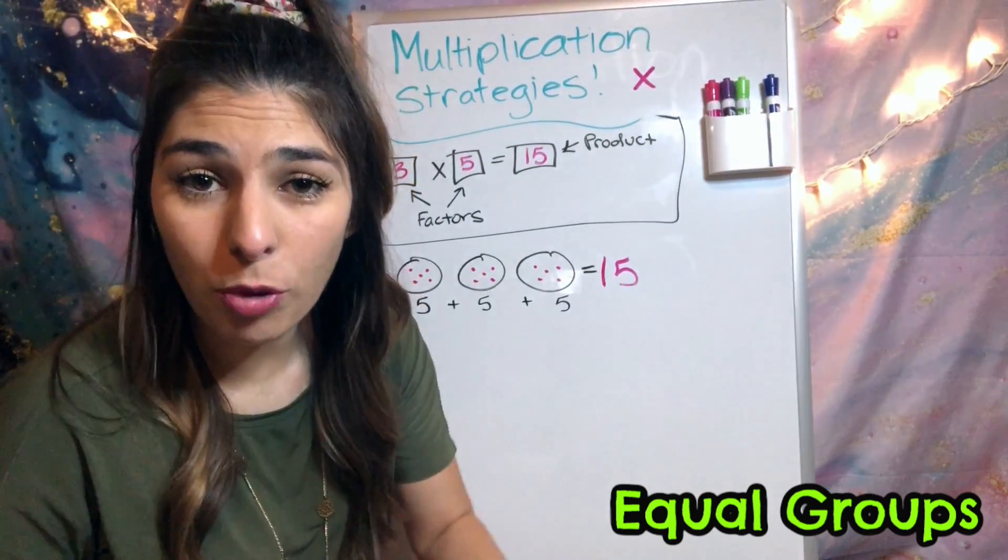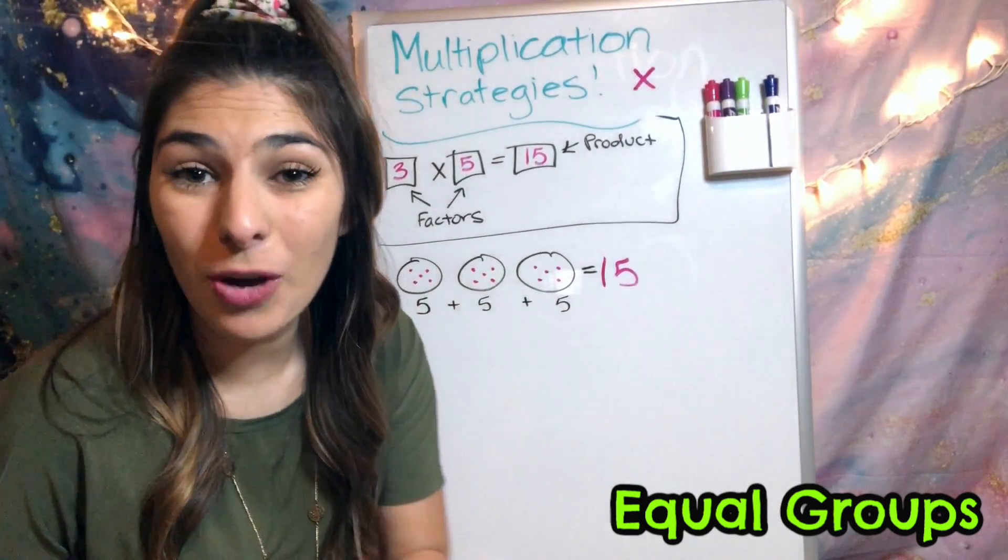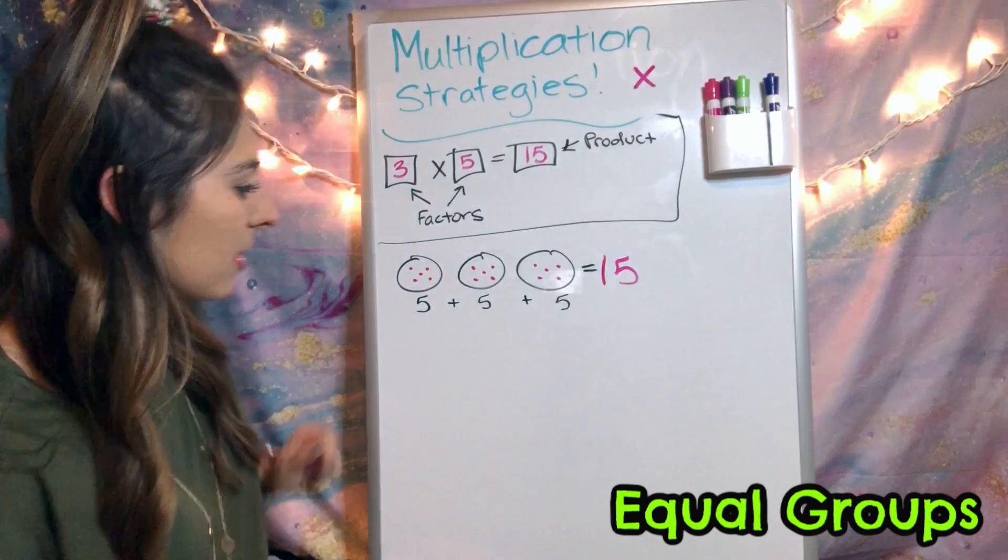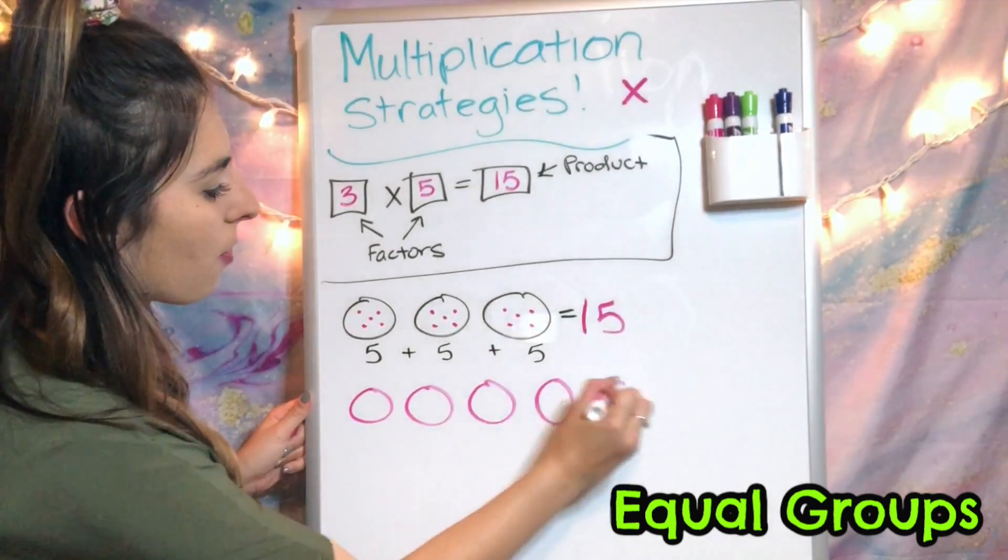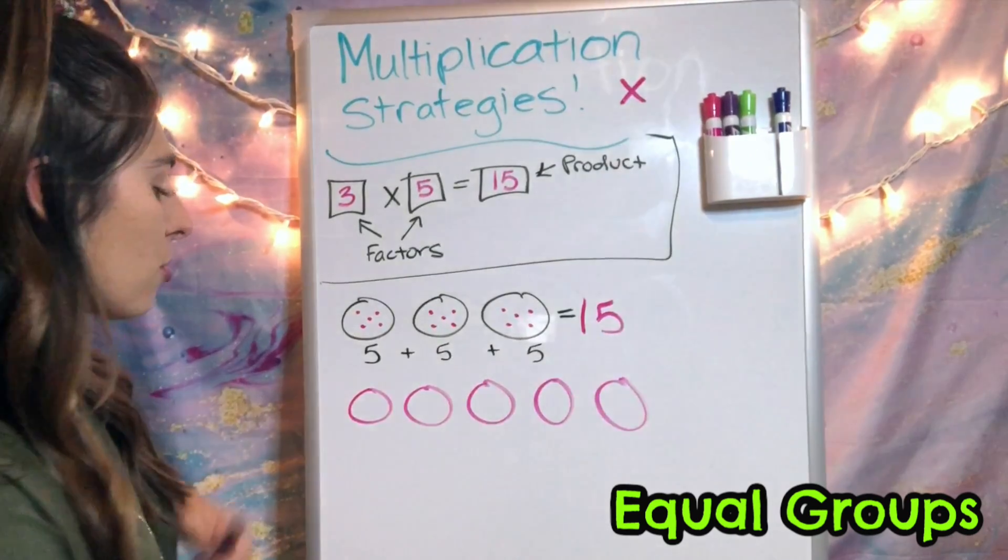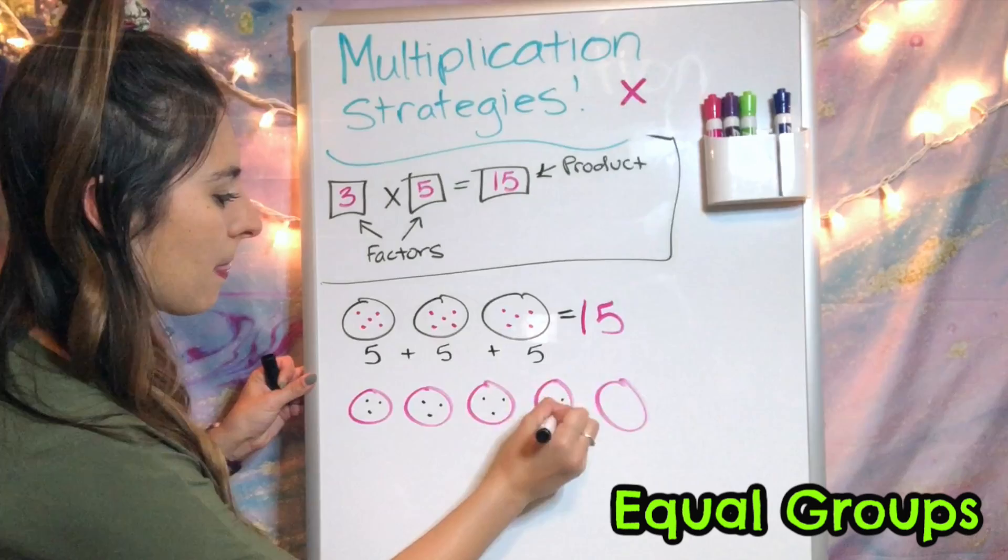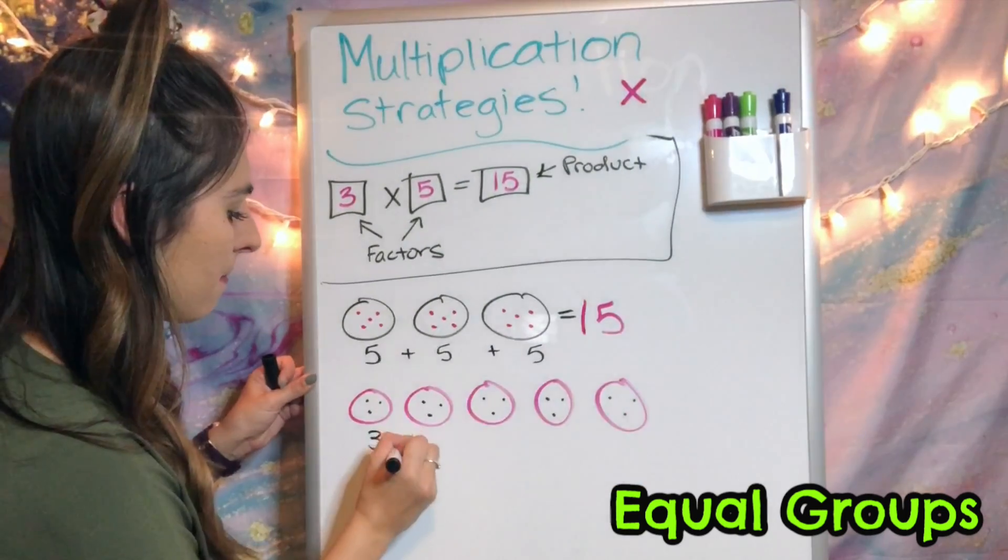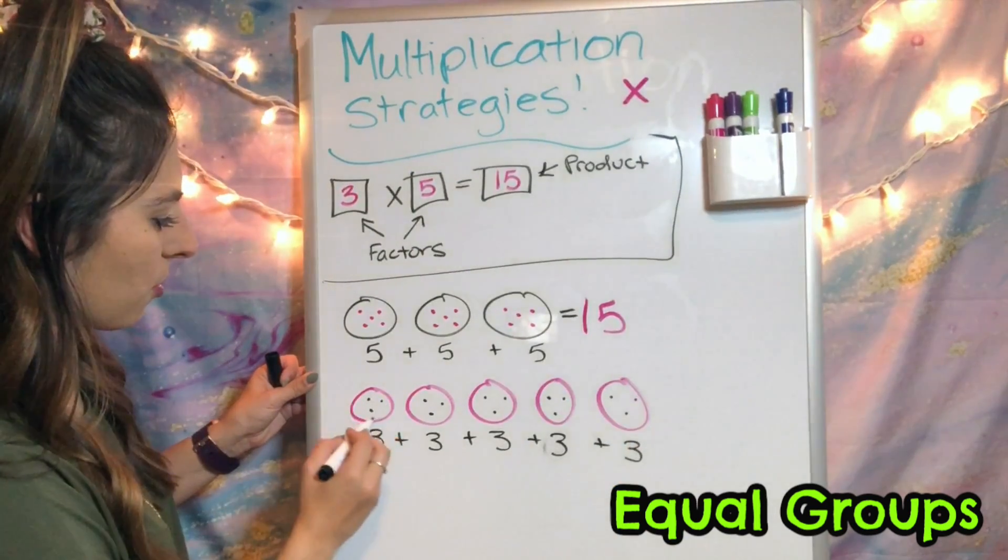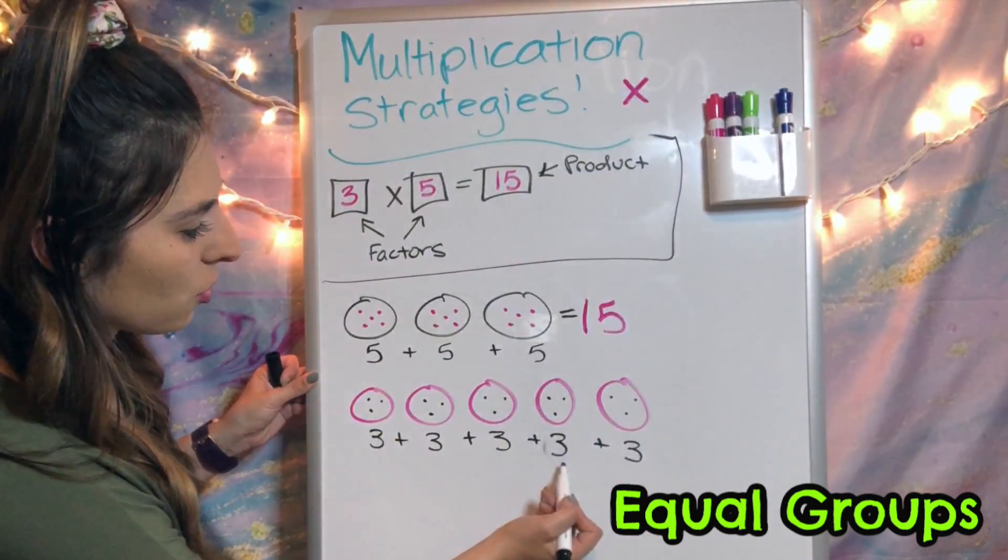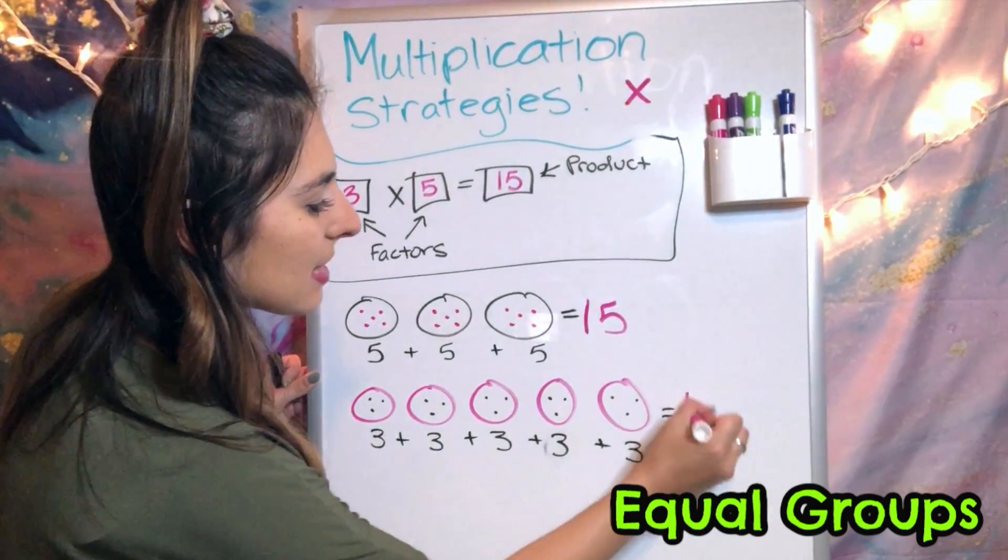With this, if you do commutative property, you can switch them and then you can do five groups and each one will have three dots in them. So if we did 1, 2, 3, 4, 5, and each circle had three dots in them, we have 3, 6, 9, 12, and 15. We would still get the same product.